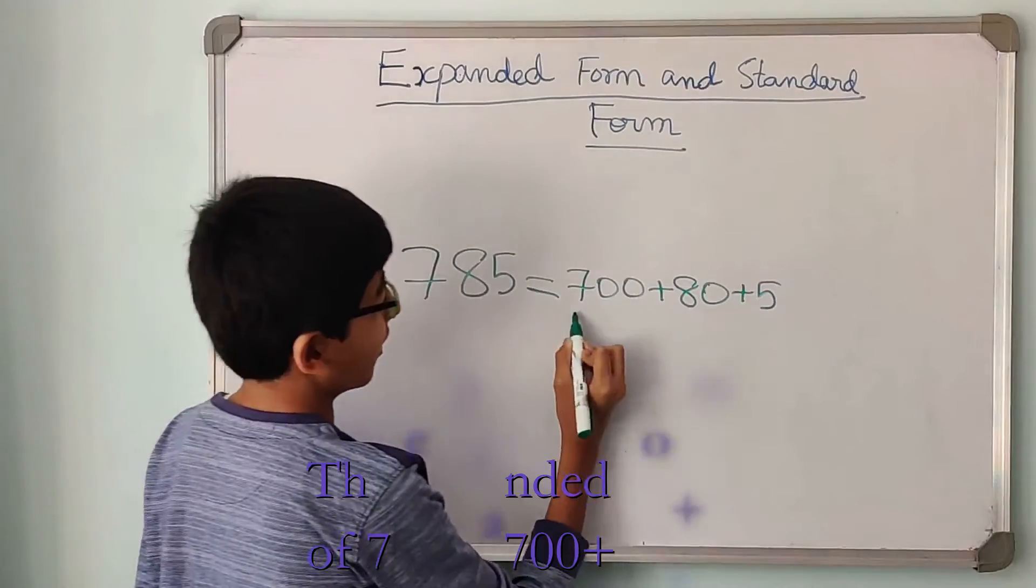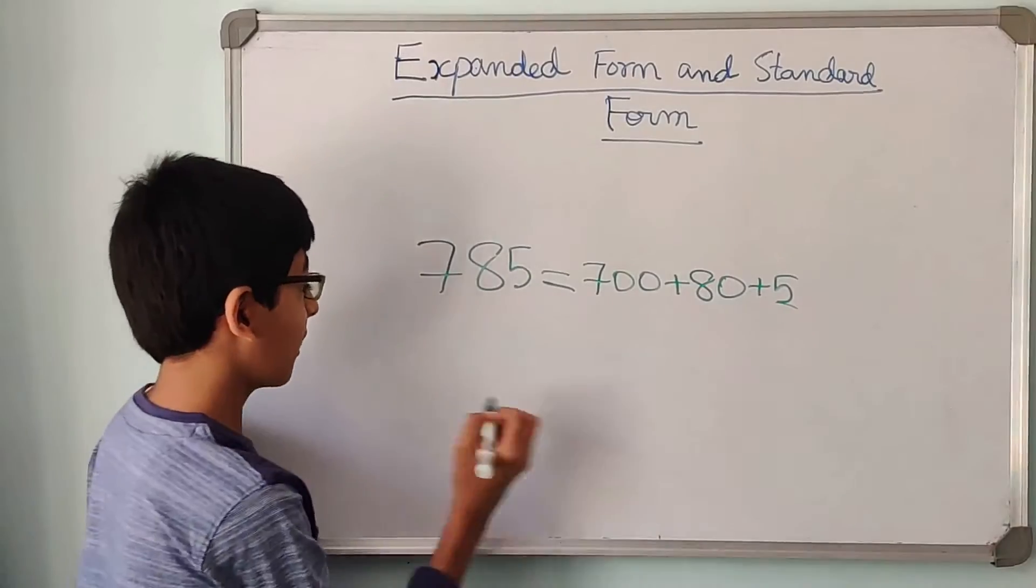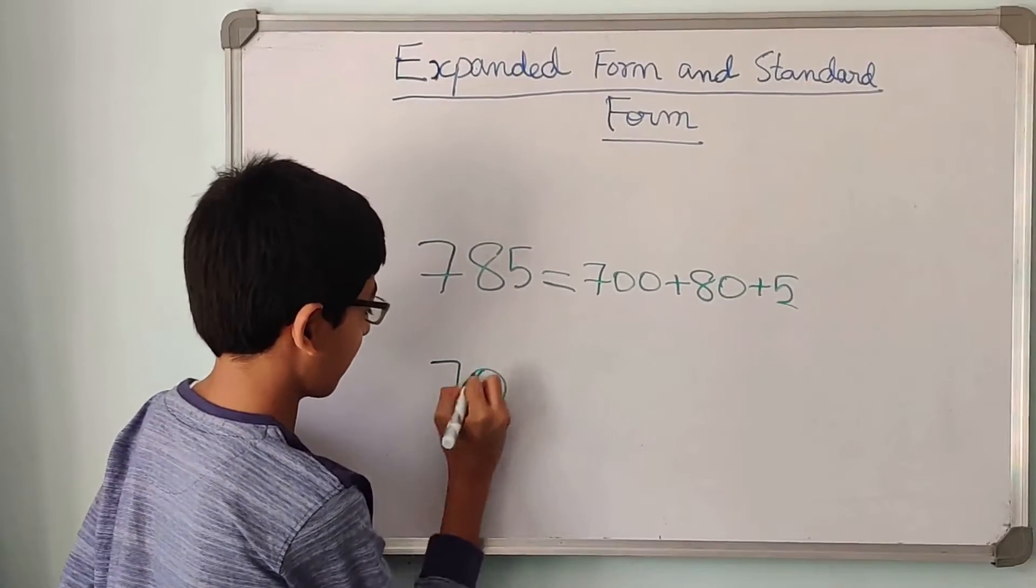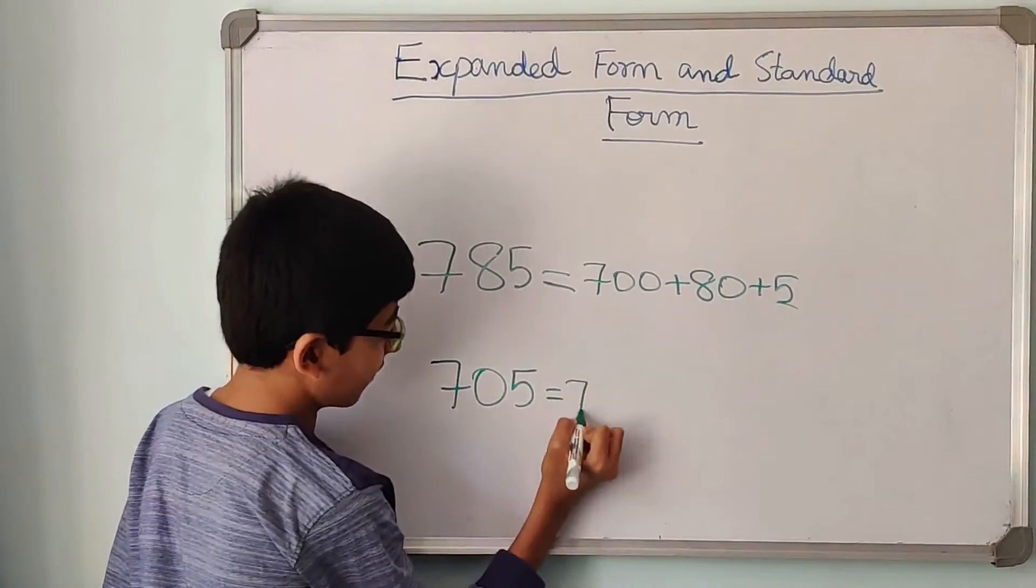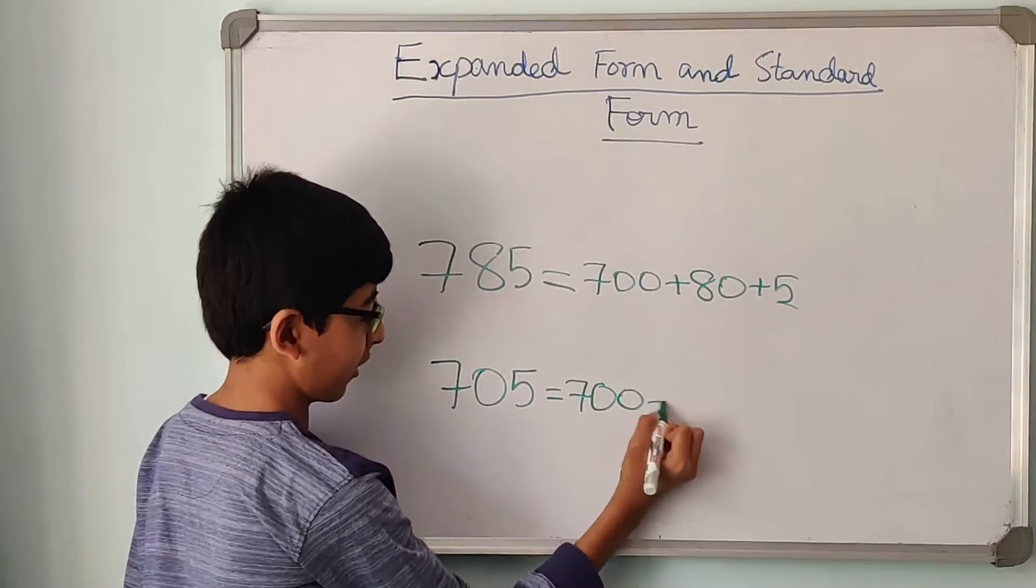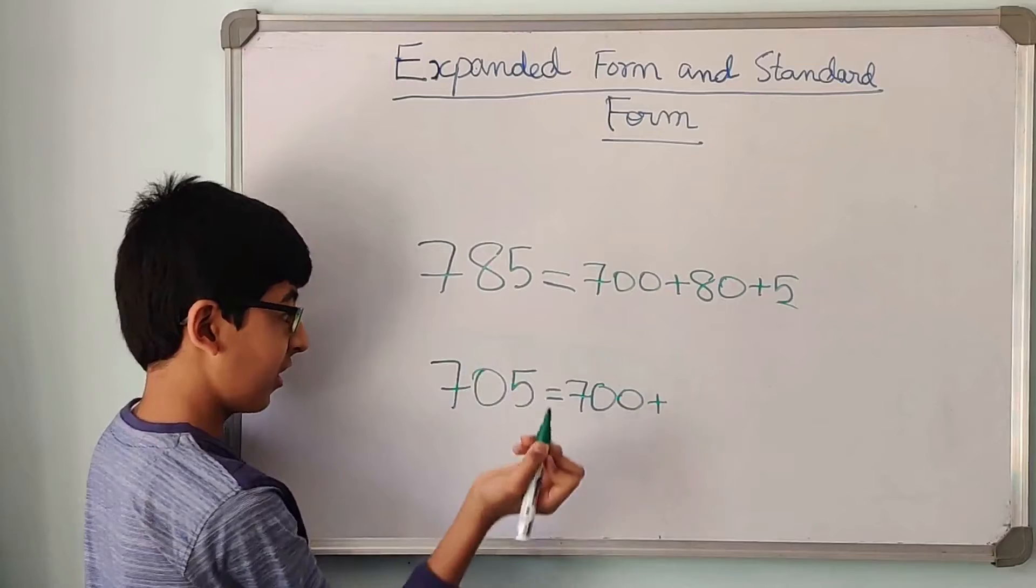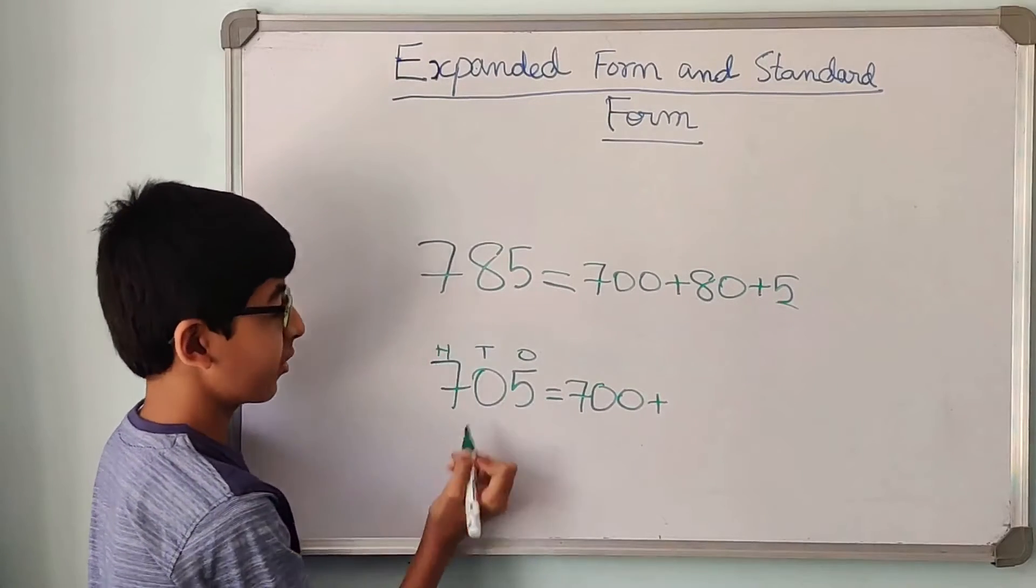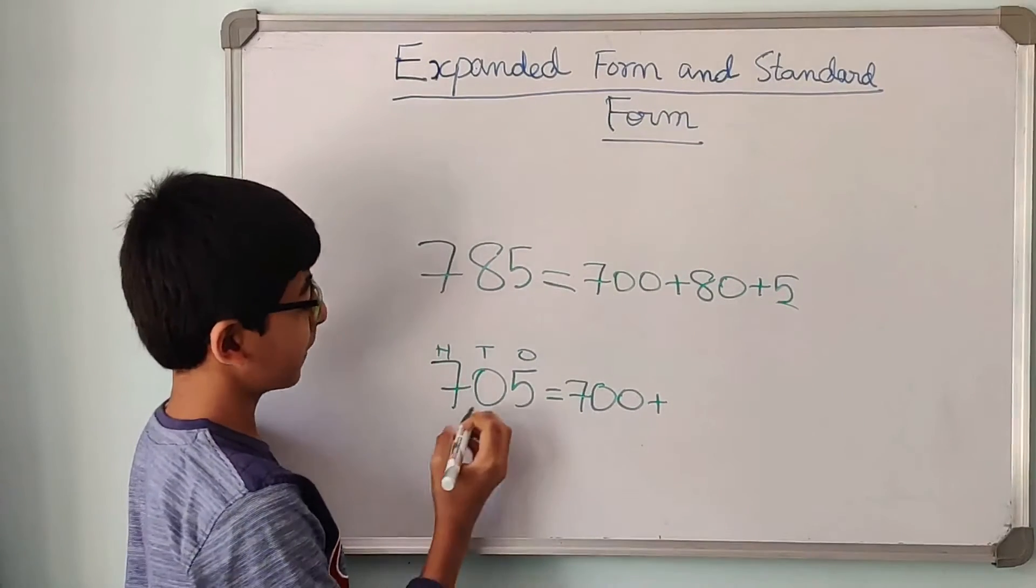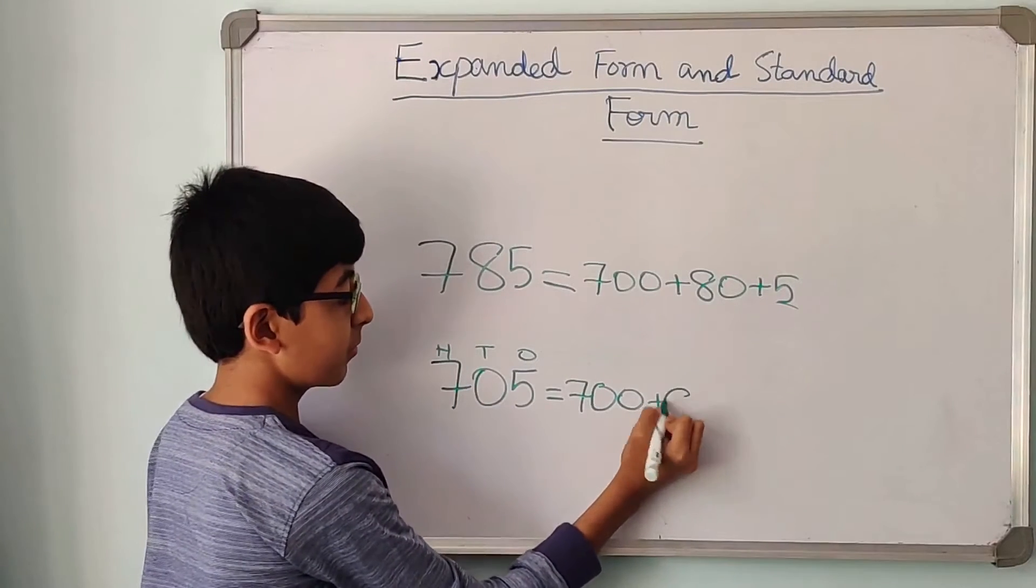So this is the expanded form of 785. Now we are going to find the place value of 705. So first we write 700 because that is the place value. Now over here, even the place is tens. Let me just write the place as ones, tens, and hundreds. So over here 0, even though it is in the tens place, but as there is a 0, so its value would be 0.